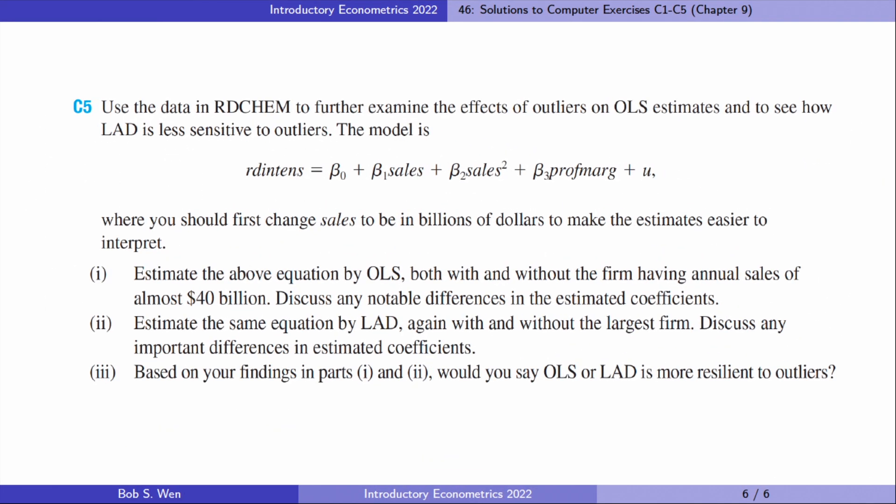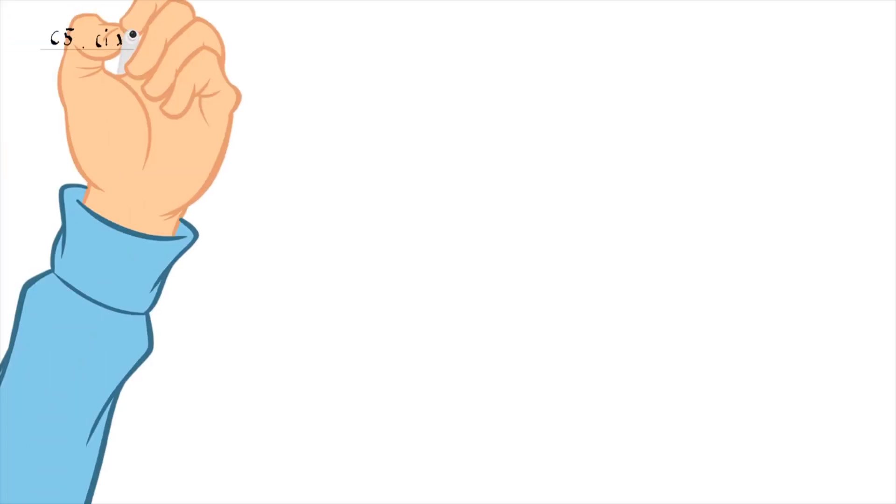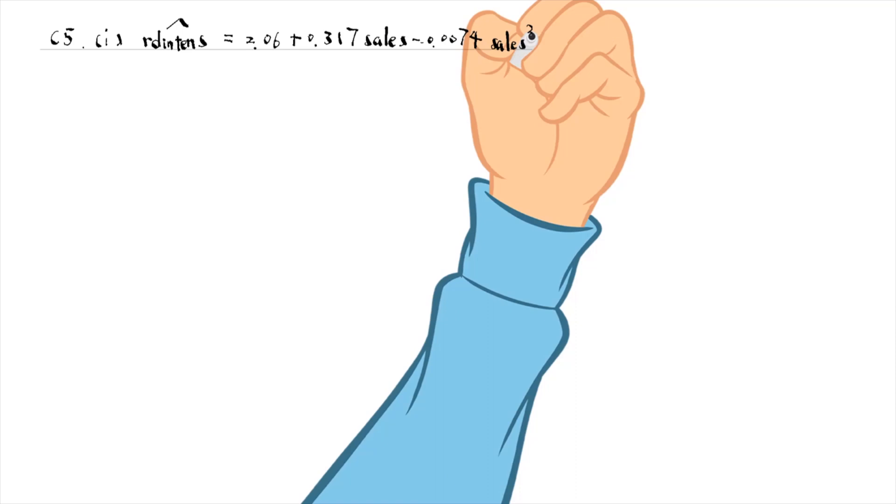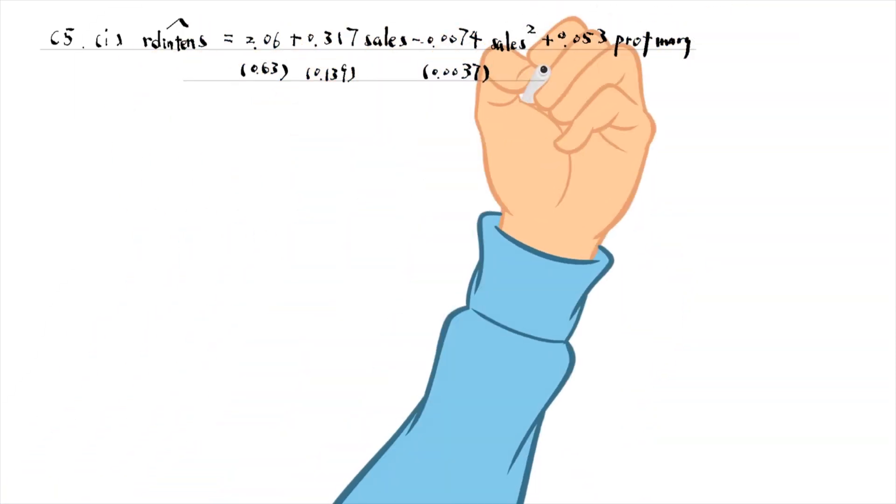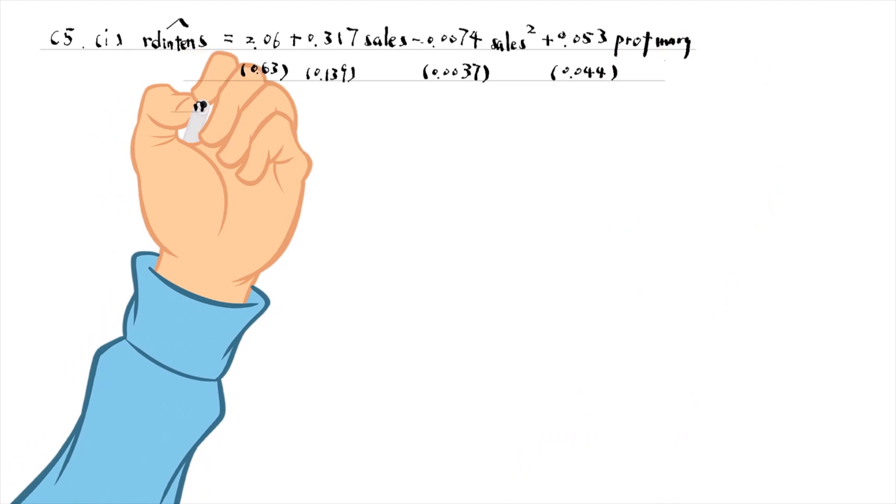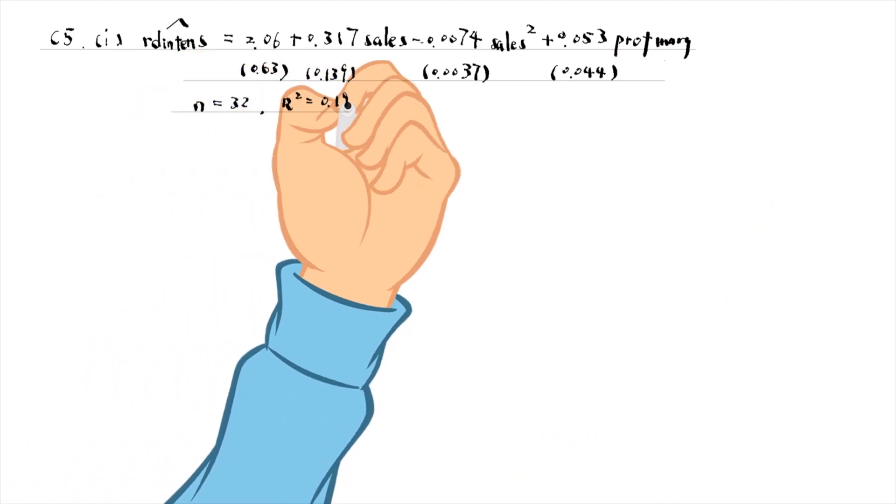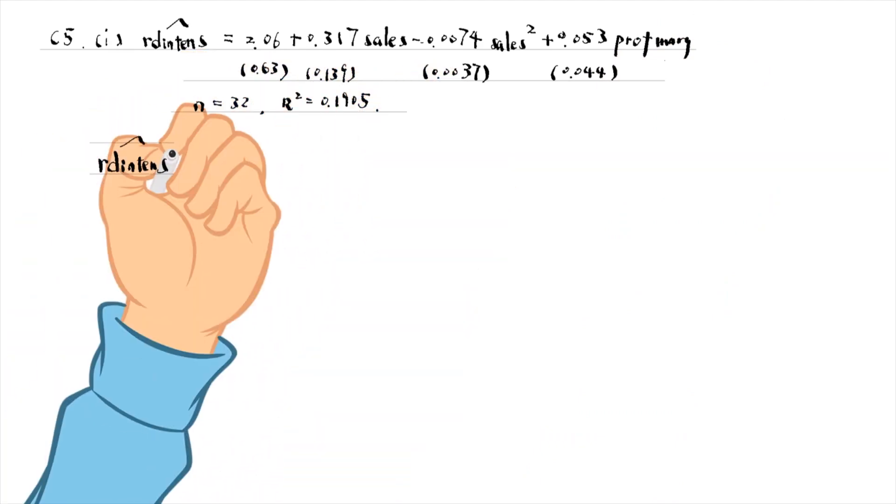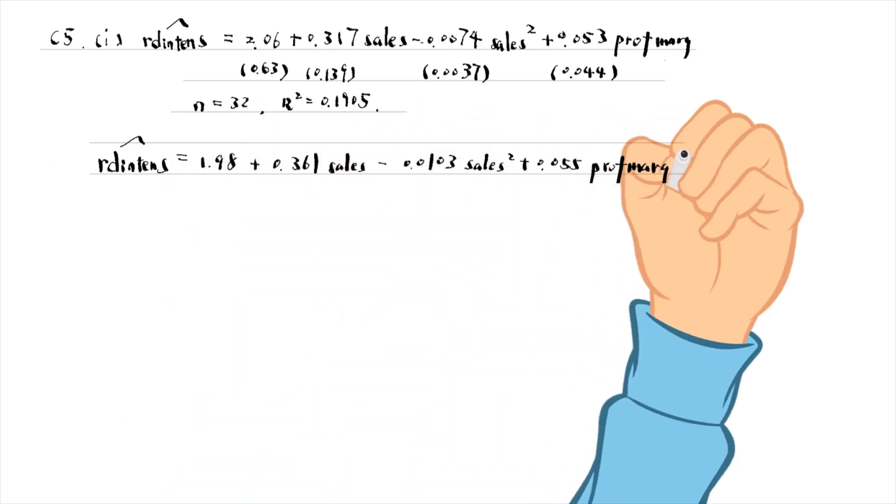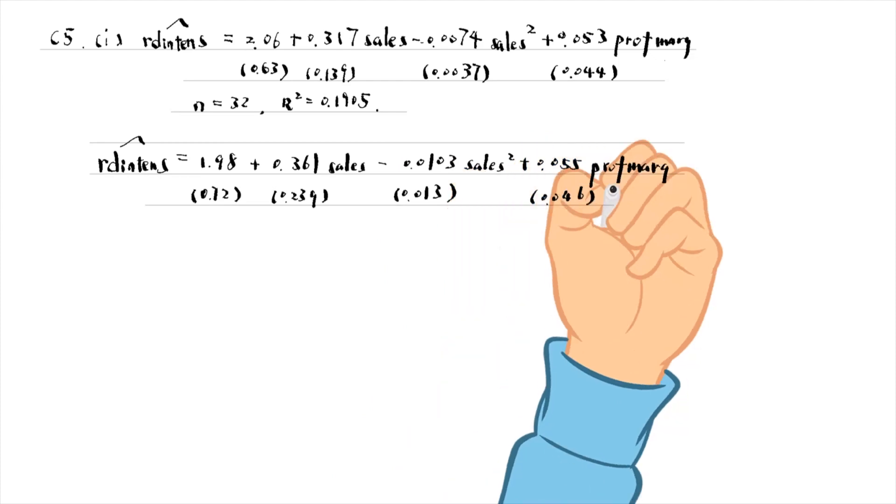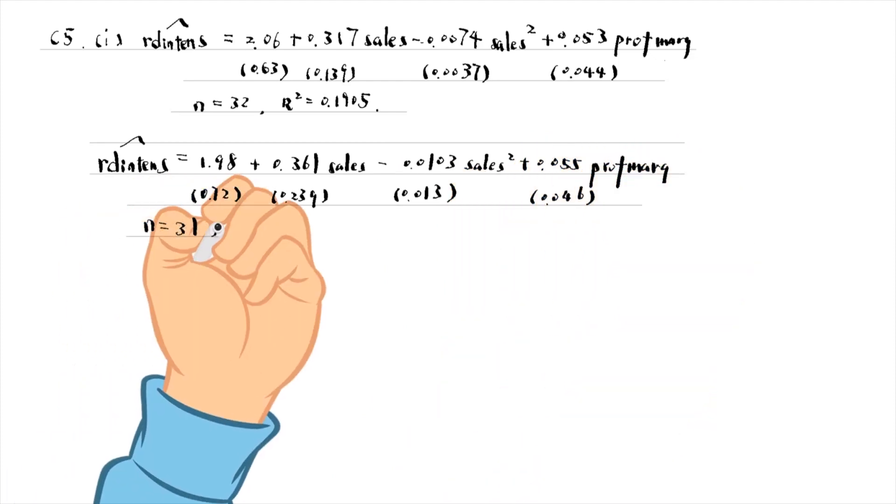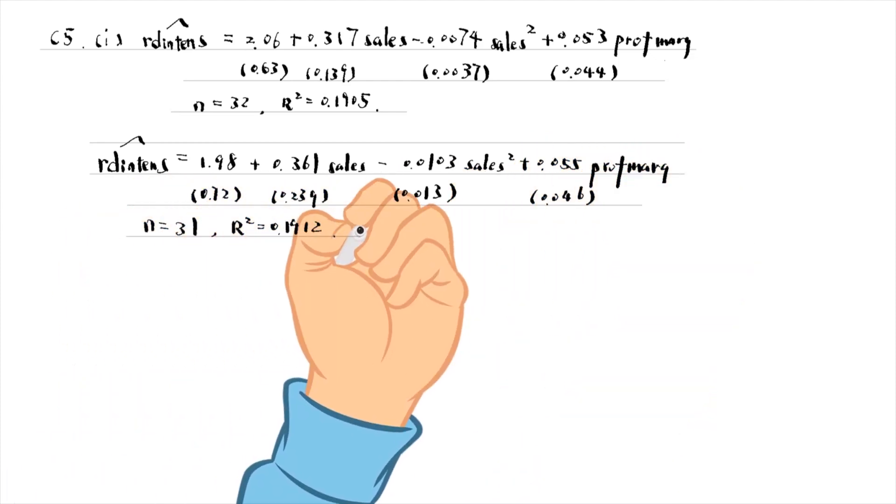Let's go to computer exercise 5. We first change the sales and square sales in billions of dollars. The estimated OLS equations are as follows. The first one is with the outlier observation and the second is without the outlier. There is no notable change in the estimates.